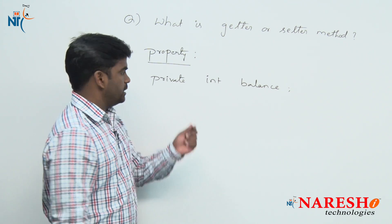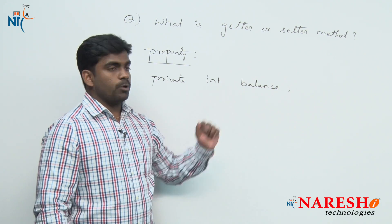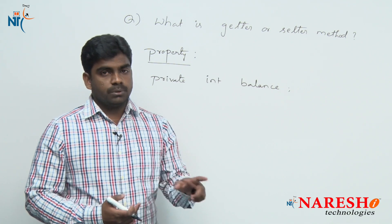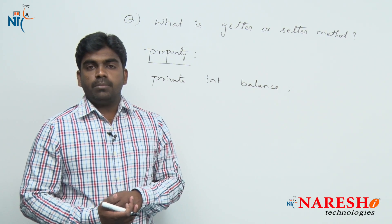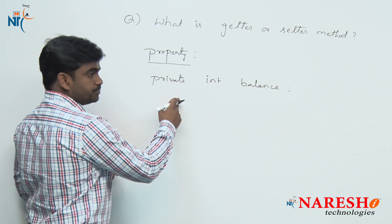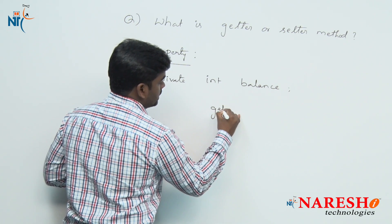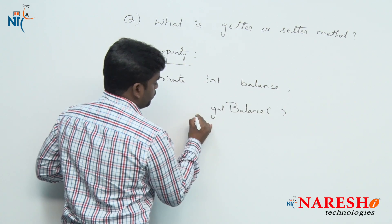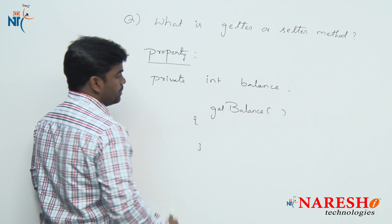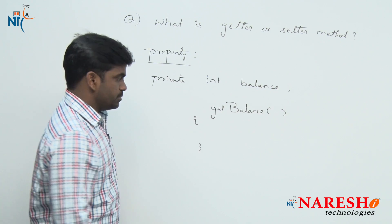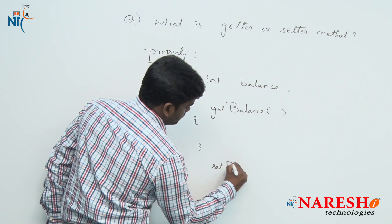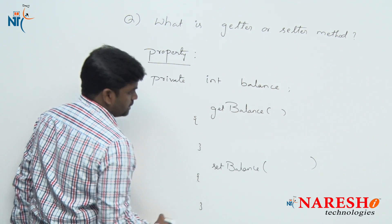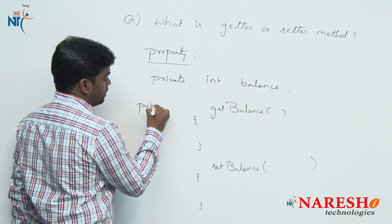According to the POJO rule, it is a private property — balance. Then how can we access it? We cannot access it if it is private; it is impossible to access from outside. So here we write a getter method. Getter method means: getBalance method — B capital letter. Follow the naming convention rules: getBalance method, and next one setBalance method. Both are public methods only.